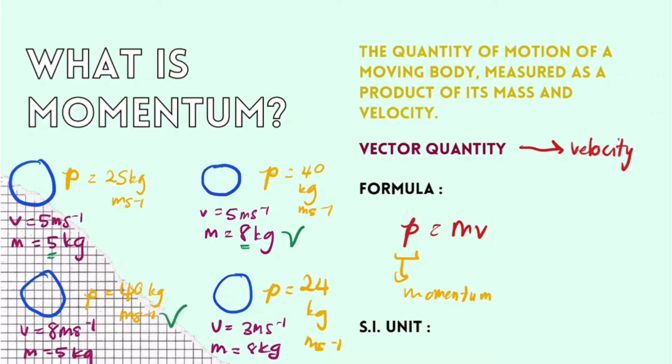That is because, as I said, momentum is affected by both the mass and velocity of the object. You could also see momentum as a quantity to determine how hard it is to stop an object in motion — it will be harder to stop a heavier and faster object. The SI unit for momentum would be kg m/s.